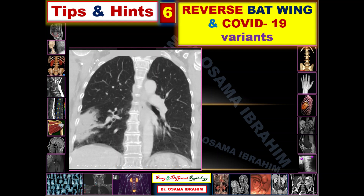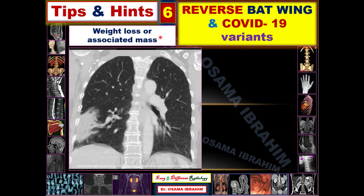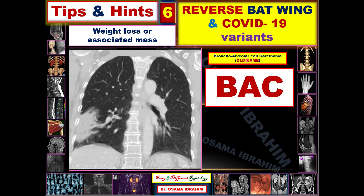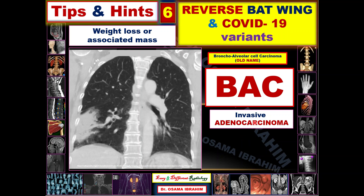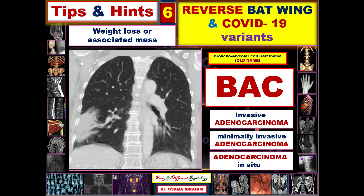Again, this is an HRCT coronal reformatted image showing consolidation at the periphery of the film in a subpleural location, sparing the perihilar region. Even though it is unilateral, you can consider it a reverse batwing and search the differential diagnosis according to the patient's history. With a history of weight loss or an associated mass, you can consider it as BAC — bronchoalveolar cell carcinoma — although the new WHO classification now calls this invasive adenocarcinoma, minimally invasive adenocarcinoma, or adenocarcinoma in situ.